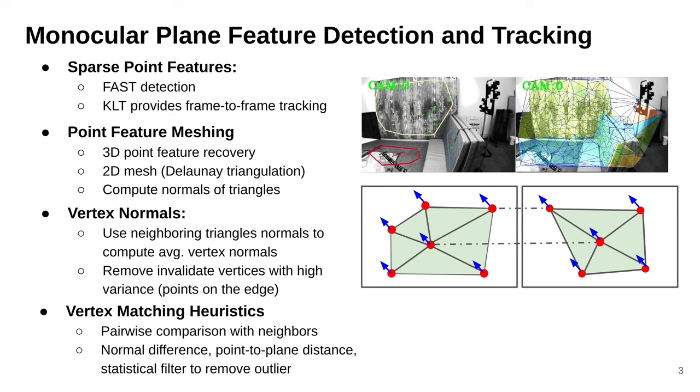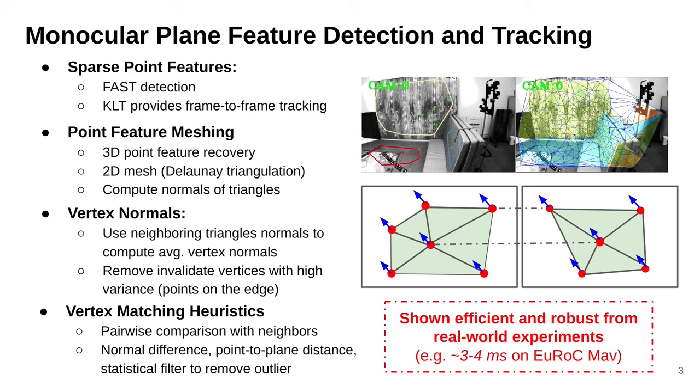Finally, we compare the vertex normals with their neighborhoods to determine if two points are on the same plane. We also leverage various techniques to robustify this process. Our plane feature detection and tracking algorithm has efficient, accurate, and robust performance. It takes only 3 to 4 milliseconds on the EuRoC MAV dataset.